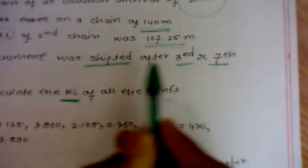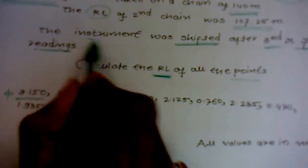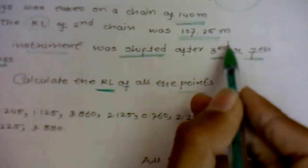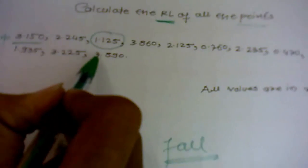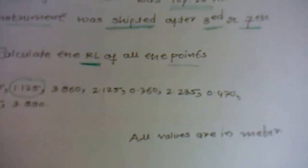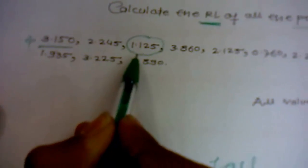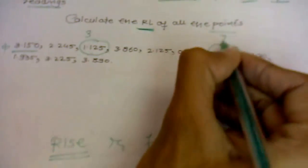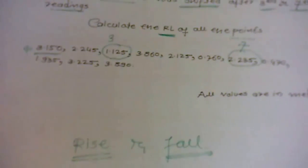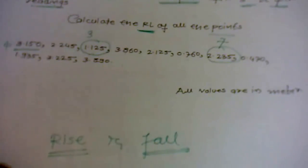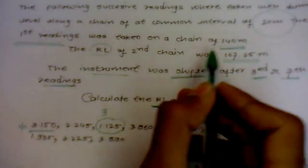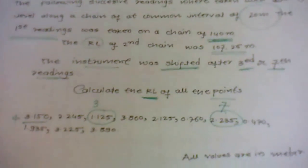The numerical says that the 3rd and 7th reading is shifted - the instrument is shifted after 3rd and 7th reading. So the 3rd reading is 1.125 at this point the instrument gets shifted, and at 7th reading that is 2.235. Also one point tells us that the first reading was taken on a chain of 140 meters.